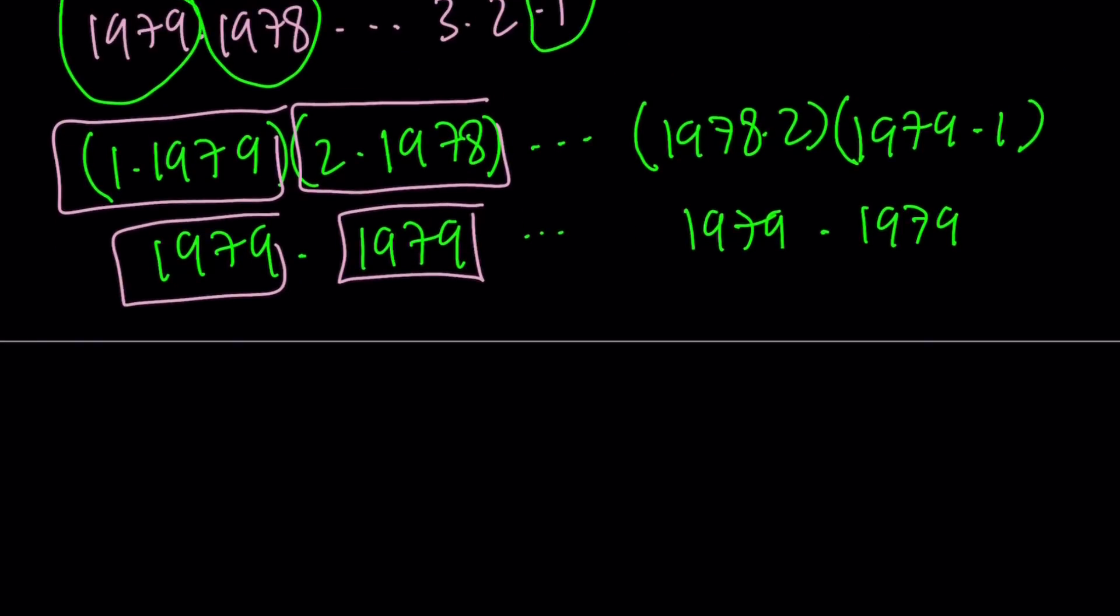Think about it: 1 times 1979 - same thing, right? So they're equal. But can I say that 1 times 1979 is greater than or equal to 1979? I'm comparing these two numbers. Yes, it's true. People say no, it's not greater, it's equal. So greater than or equal to is good.